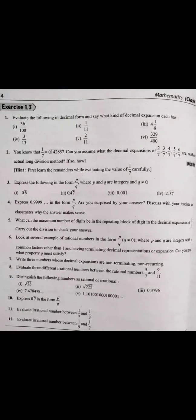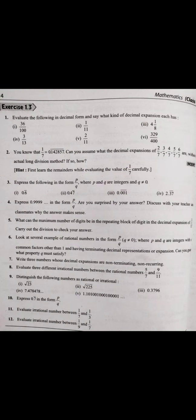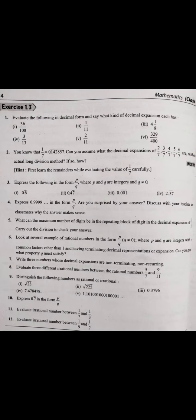Our first question asks us to evaluate the following in decimal form and say what kind of decimal expansion each has. We have two things to do: first, convert to decimal form, and second, identify what kind of decimal expansion it is — meaning in which way the decimal continues.